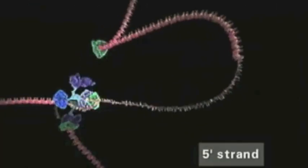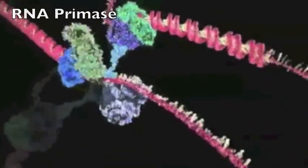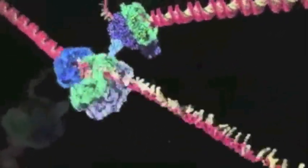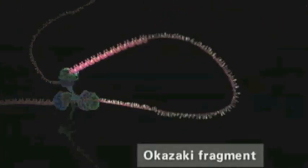The other strand is called a lagging strand. This strand requires more help. RNA primase comes in and adds short segments of RNA primer. These segments are called Okazaki fragments.